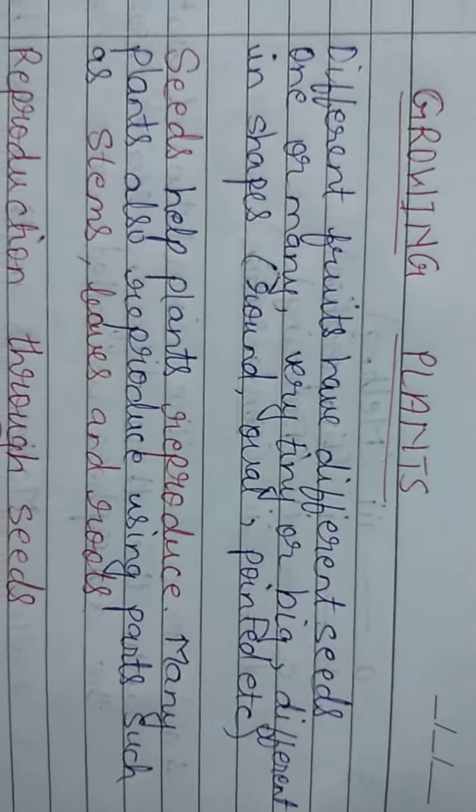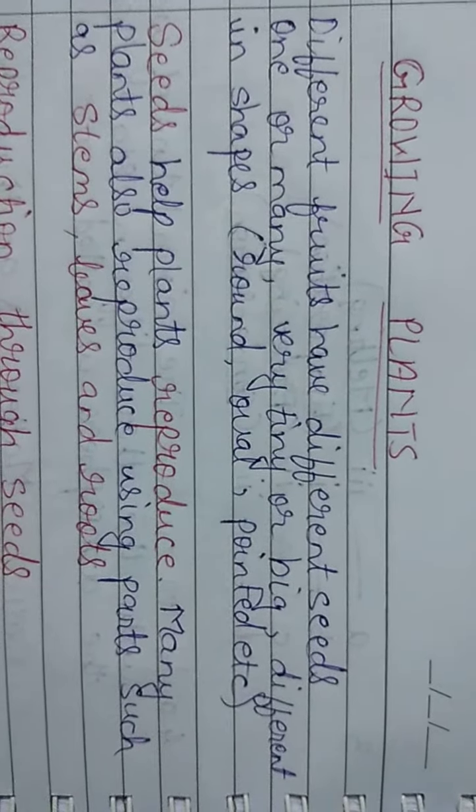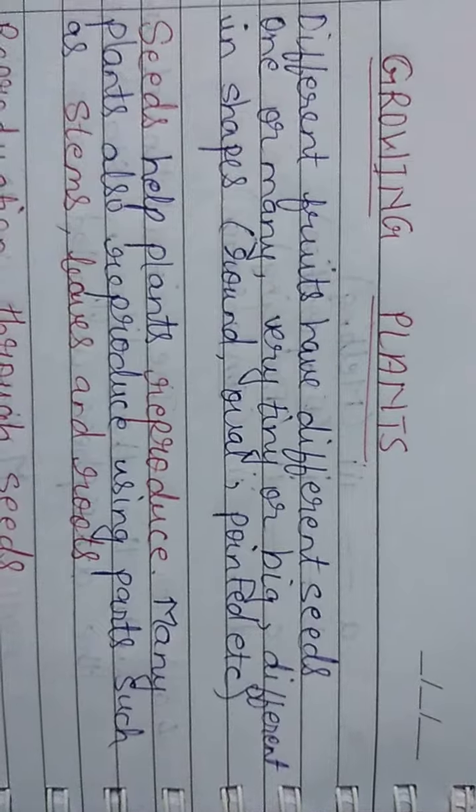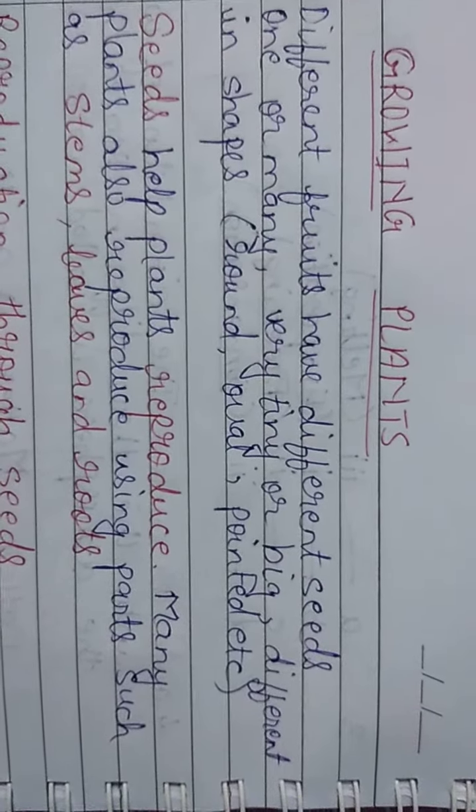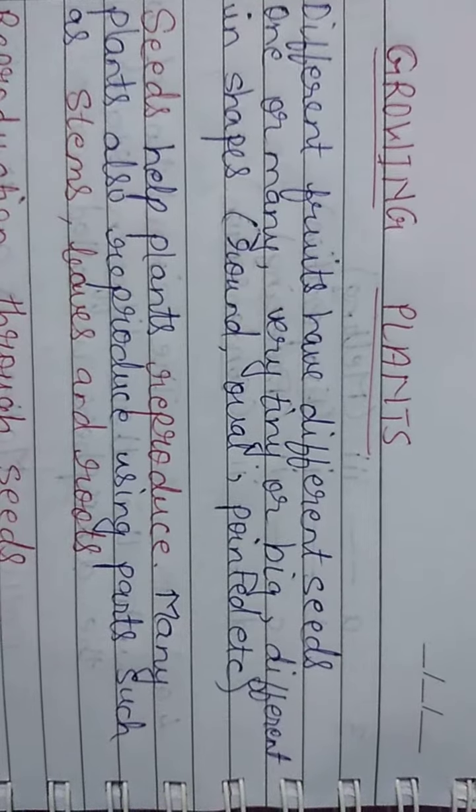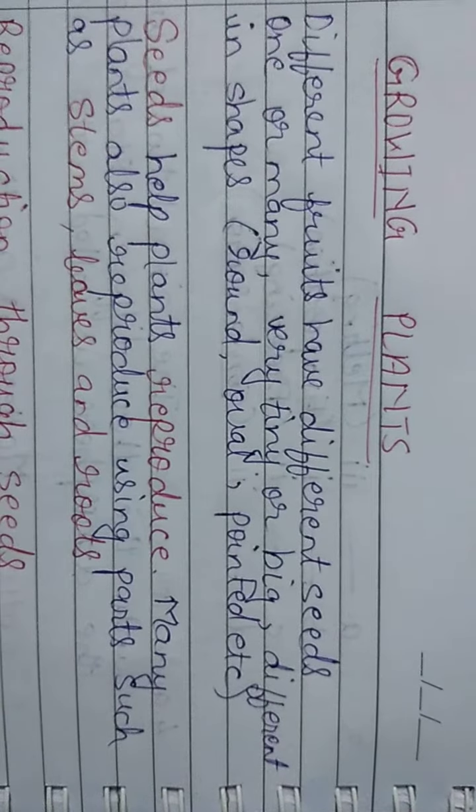Some seeds are very tiny or small, and some seeds are big. The seeds are also different in shapes. Some seeds are round, oval, pointed, etc.